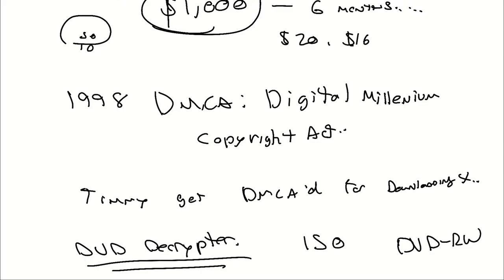The DMCA also limited the liability of providers — the safe harbor provision means that YouTube is not responsible for potentially having copyright-infringing material that somebody else uploaded. However, they do have a responsibility to take it down if requested. The DMCA's principal innovation in the field of copyright is the exemption from direct and indirect liability of internet service providers and other intermediaries. The EU's equivalent was the Electronic Commerce Directive in 2000 and the Information Society's Directive in 2001.